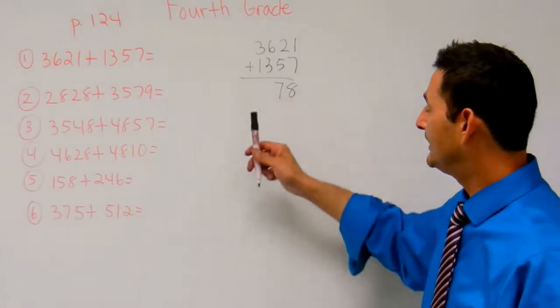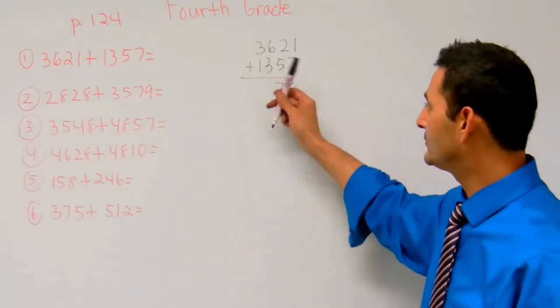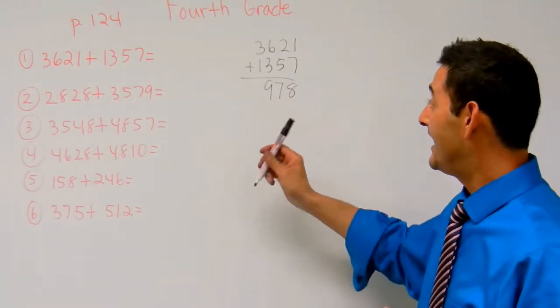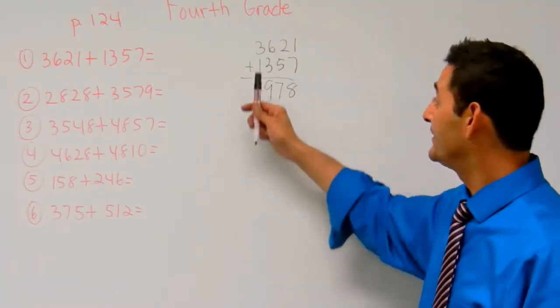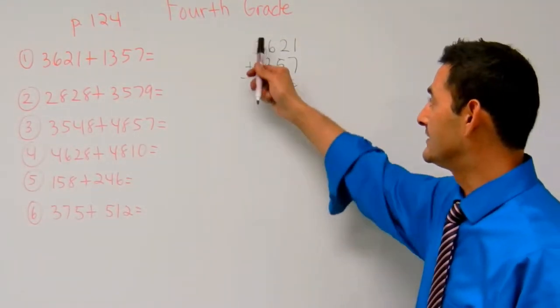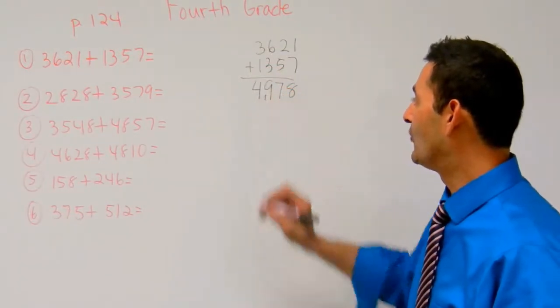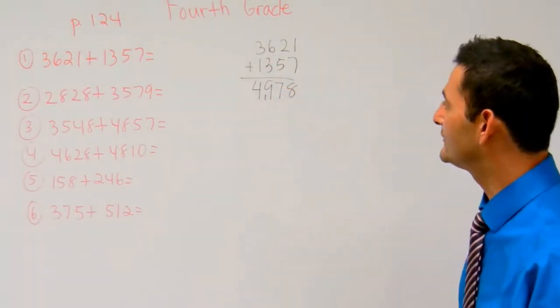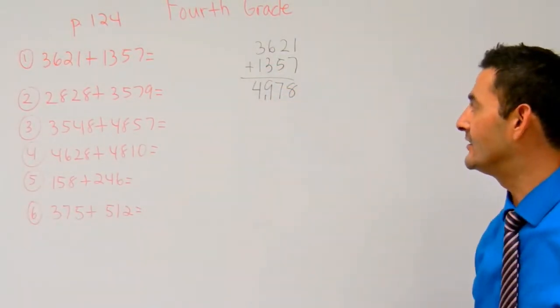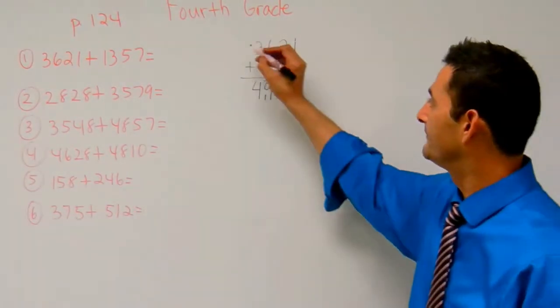100's place: 6 plus 3, that's 9. And then finally, 1,000's place: 3 plus 1, that's 4. So the answer is 4,978.